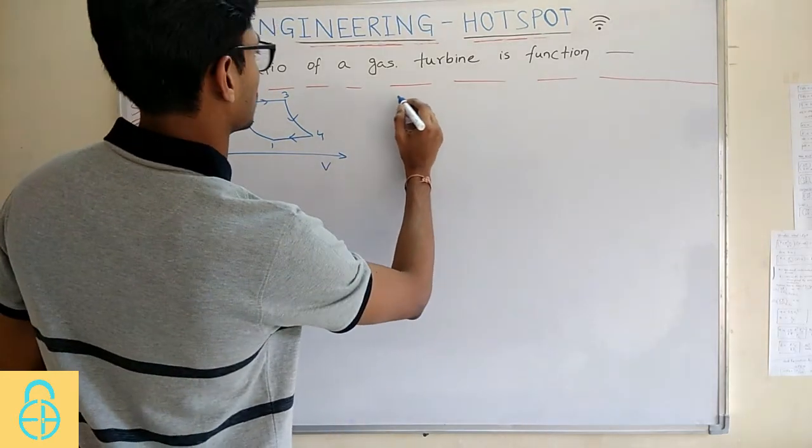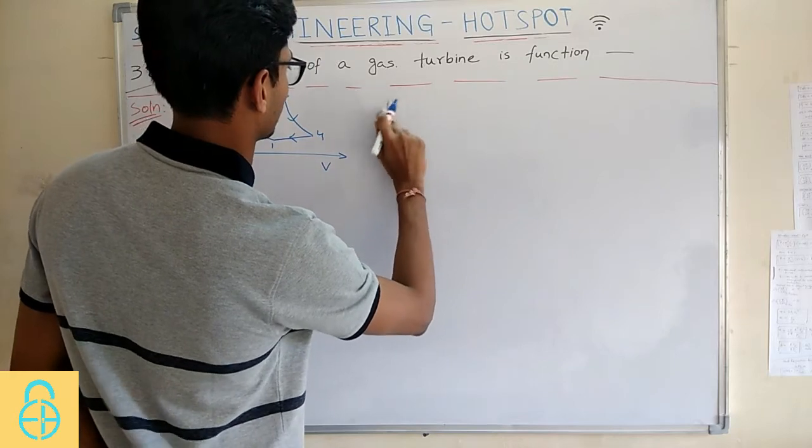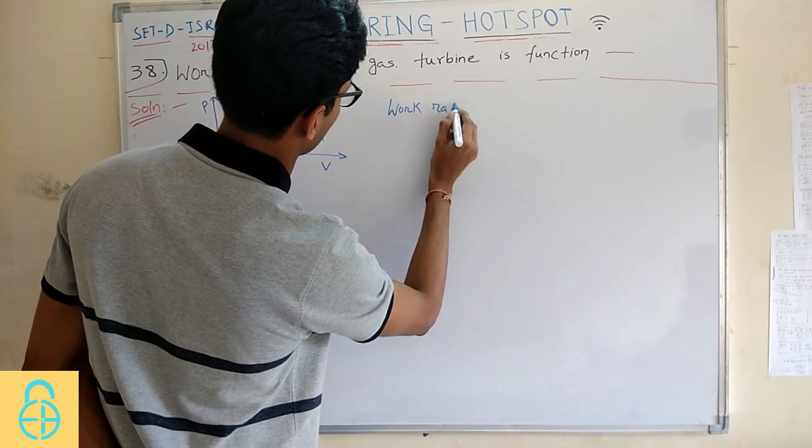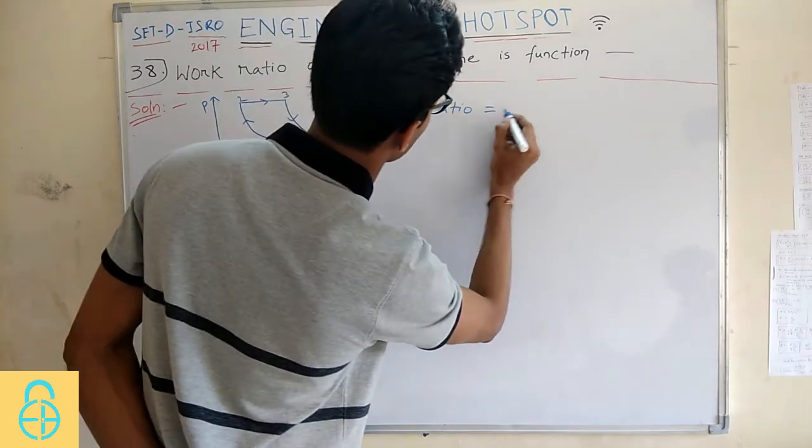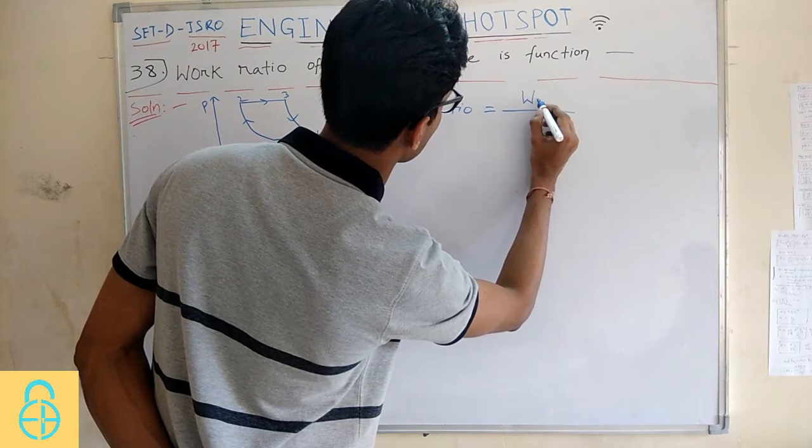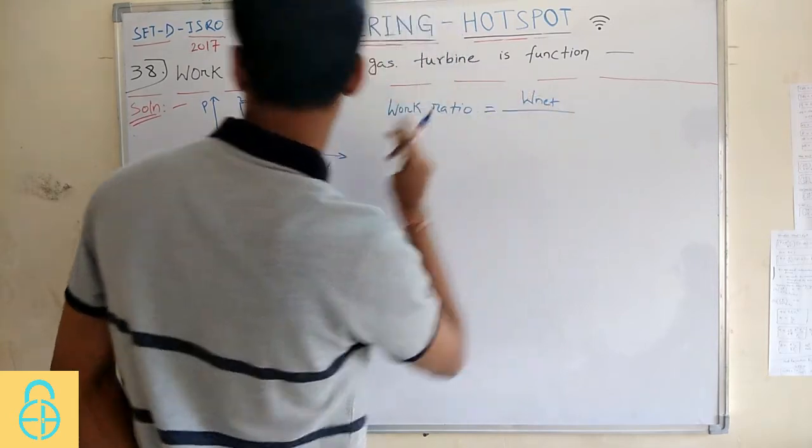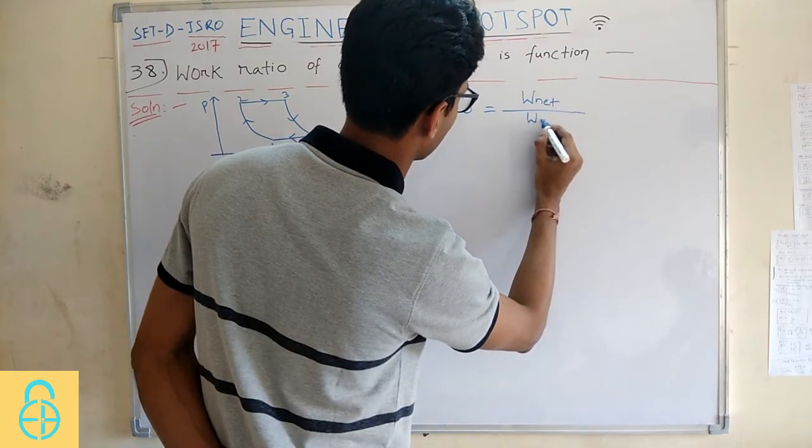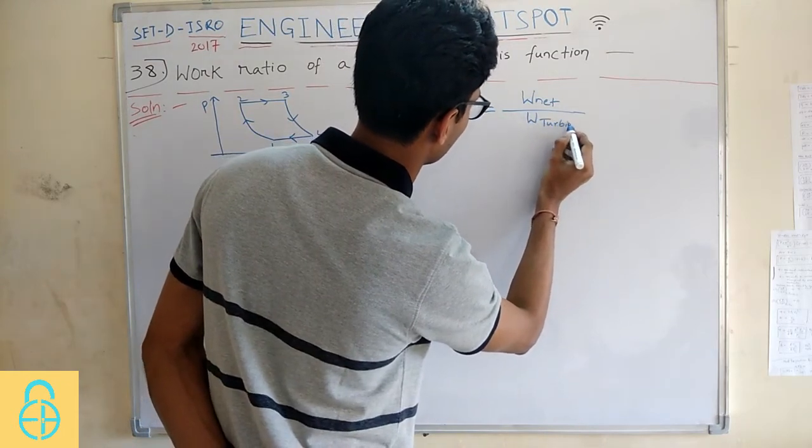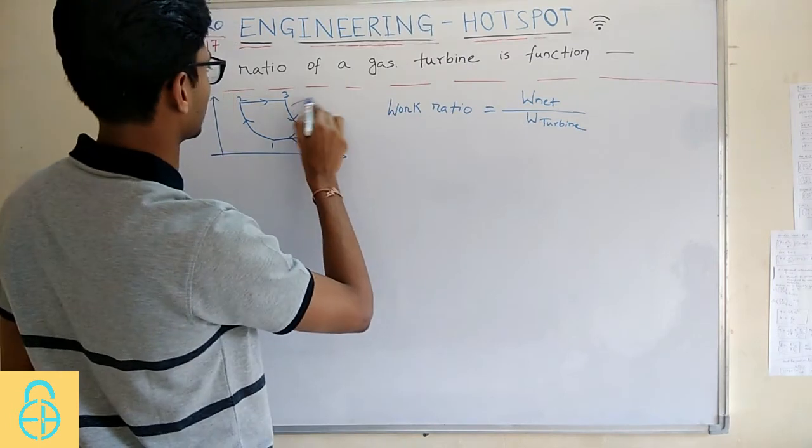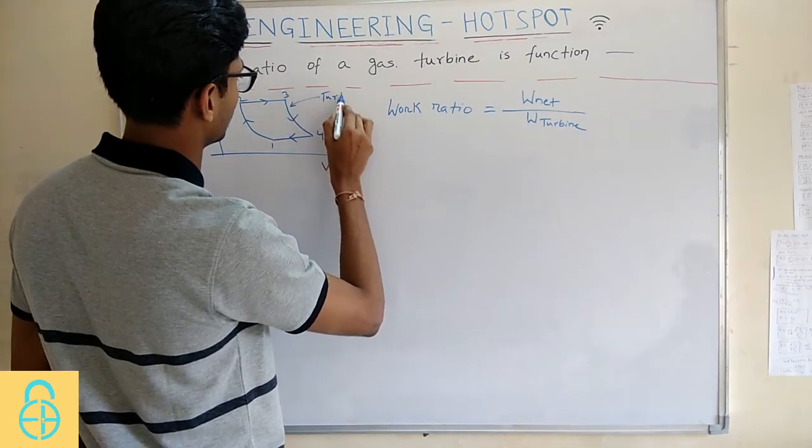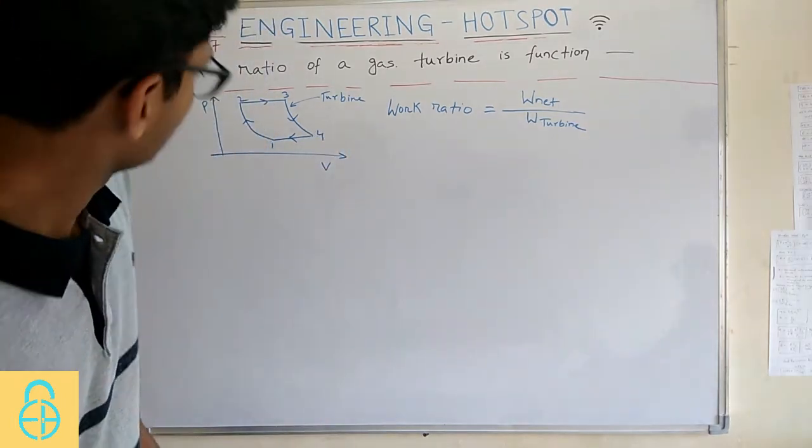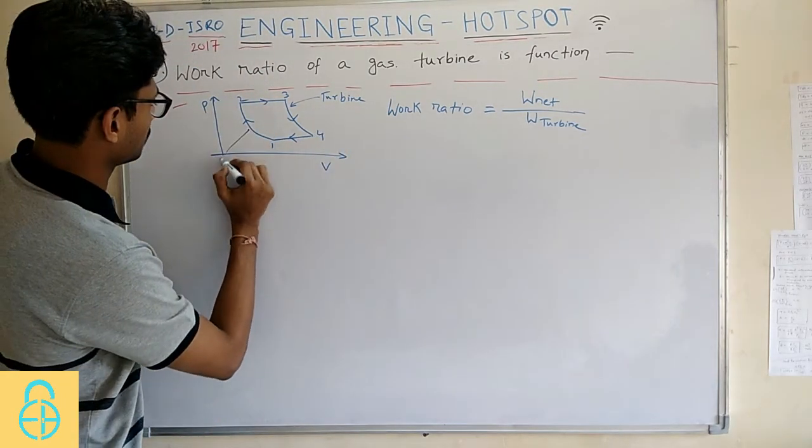What is work ratio? Work ratio is basically the W_net, means the net work done during this process divided by the work done by the turbine. This is the turbine part, this is the compressor part.